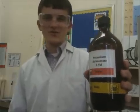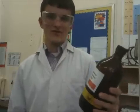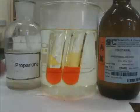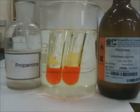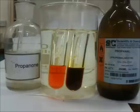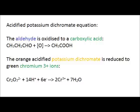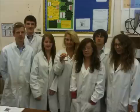Acidified potassium dichromate is a strong oxidising agent, which we can use to distinguish between an aldehyde and a ketone. We have warm acidified potassium dichromate, propanone and propanol. It has now gone from orange to green as the aldehyde was oxidised to a carboxylic acid, whilst the orange potassium dichromate becomes the green chromium 3+ ions.